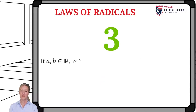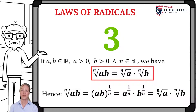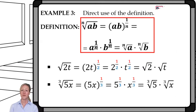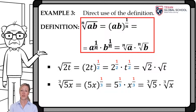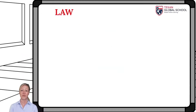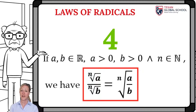The next radical law indicates that the nth root of the product of any two numbers a and b is equivalent to the product of the nth root of a times the nth root of b. For example, the square root of 2t can be expressed as 2t raised to 1 half, and by laws of exponents, separated as 2 to the 1 half times t to the 1 half — showing the square root of 2t equals the square root of 2 times the square root of t. Similarly, the cube root of 5x equals the cube root of 5 times the cube root of x.